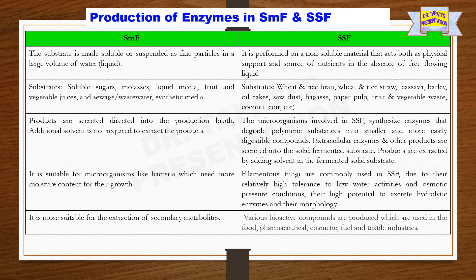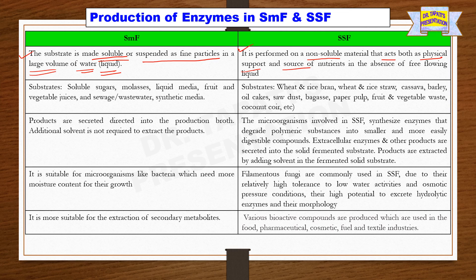Let us look at the differences between SSF and SMF processes. In the case of the SMF process, the substrate is made soluble or suspended as fine particles in a large volume of water — that is, in the SMF process, liquid media is produced. Whereas in the case of the SSF process, it is performed on a non-soluble material that acts both as physical support and source of nutrient, in the absence of free flowing liquid.